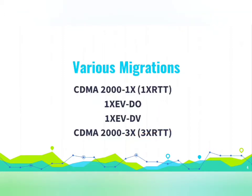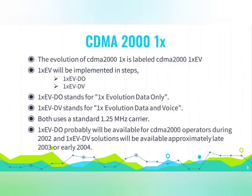There are various migrations of CDMA 2000: CDMA 2000 1X, 1X EVDO, 1X EVDV, and CDMA 2000 3X. CDMA 2000 1X evolution is labeled CDMA 2000 1X EV, which will be implemented in two steps: 1X EVDO and 1X EVDV. DO stands for data only and DV stands for data and voice.